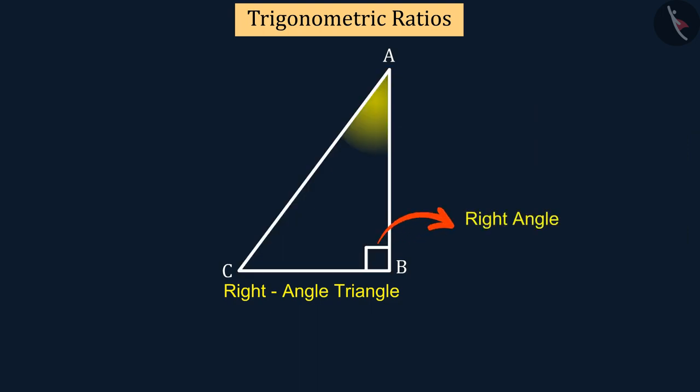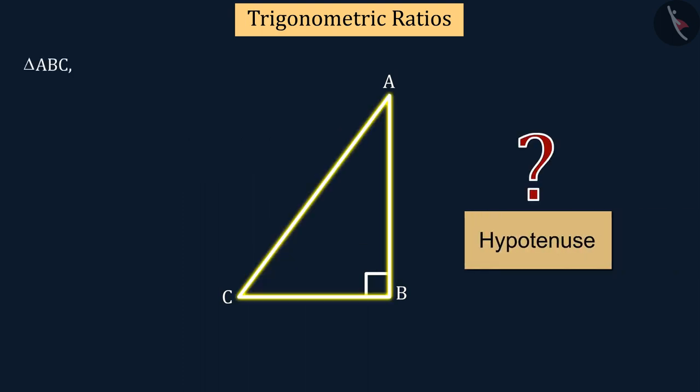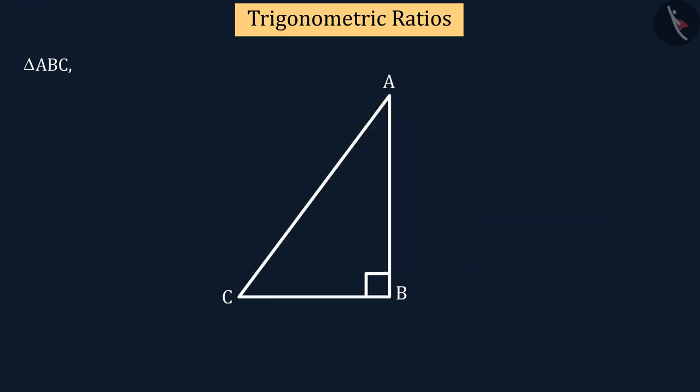In which angle B is right angle and angle A and angle C are acute angles. Which side is hypotenuse in this triangle? We know that in a right angle triangle, the opposite side of the right angle is hypotenuse.